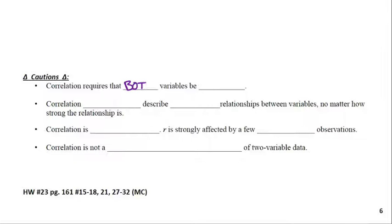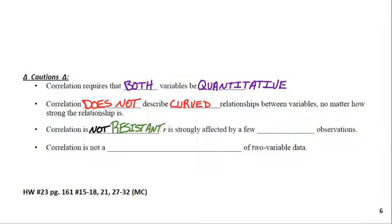Some cautions about correlation. Correlation requires that both variables be quantitative, which should make sense. Quantitative variables are what we use for scatter plots. We don't even use categorical variables for scatter plots. Correlation does not describe curved relationships. Only linear. And correlation is not resistant, and it's strongly affected by outliers. So it's not resistant to outliers. We talked about resistance in chapter one.